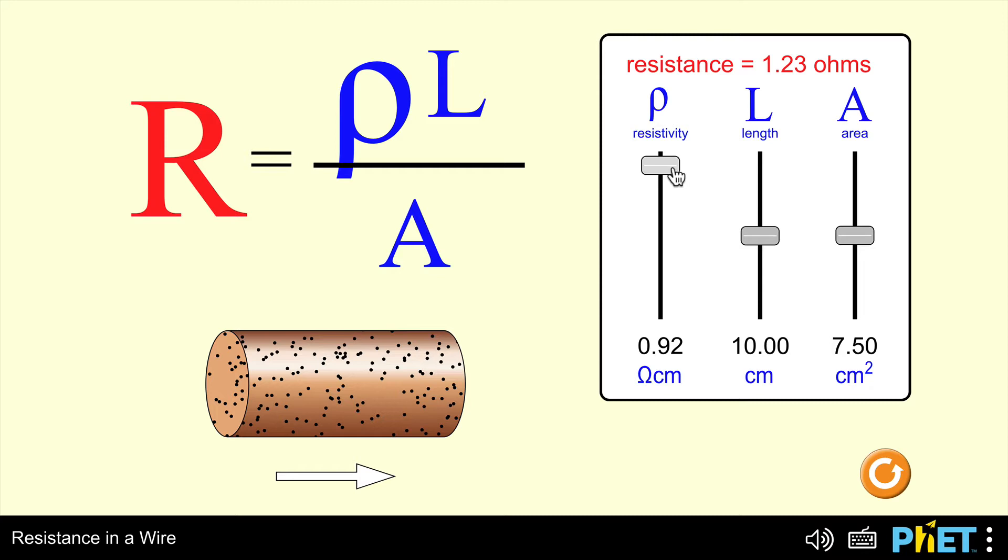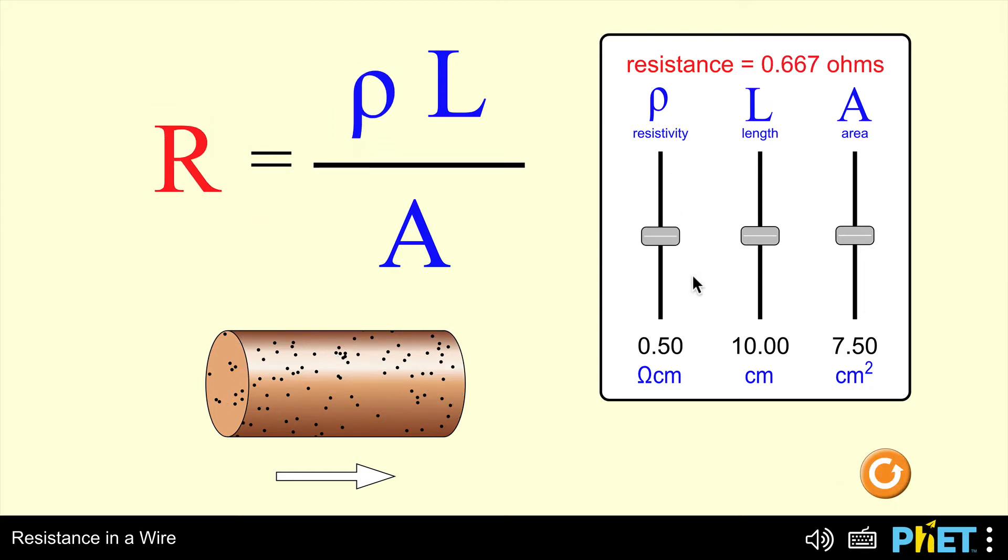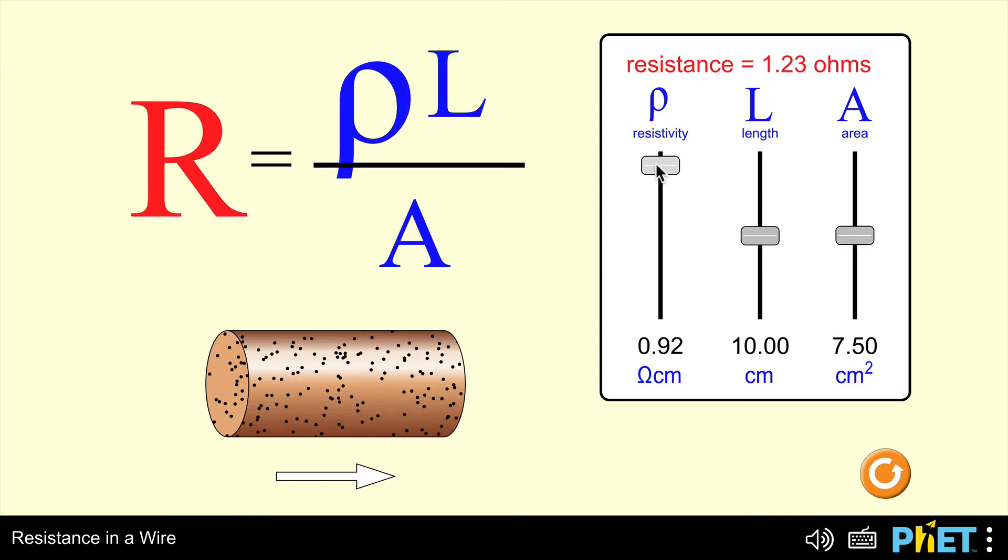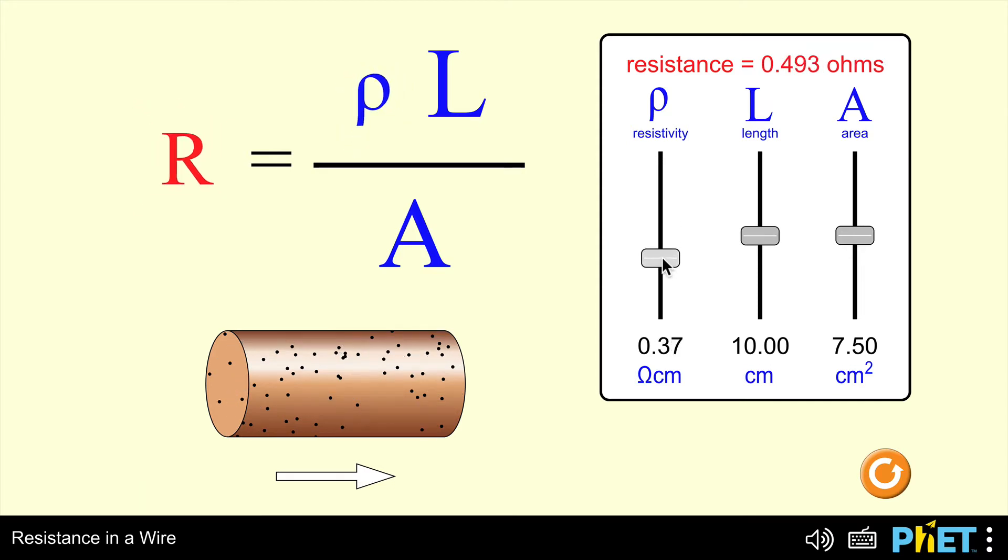You can see that as resistivity increases, the resistance increases, and as it decreases, the resistance decreases. I'm not too worried about that. For National 5, I'm more interested in what's happening with the length of the wire and the cross-sectional area of the wire. So, let's have a look at that.